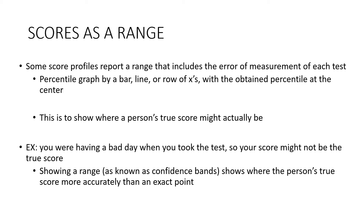If their range hits into the 80s, that means they may be performing at a B level. This is known as a confidence band — showing the range where the person's true score more accurately falls than an exact point. For example, you were having a bad day when you took the test, so your score might not be your true score. Confidence bands are very helpful for a person to understand.